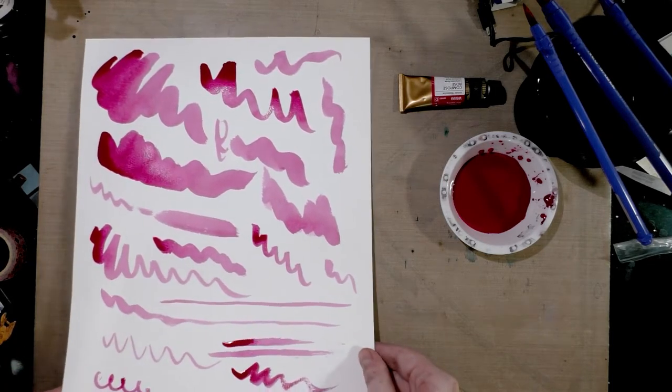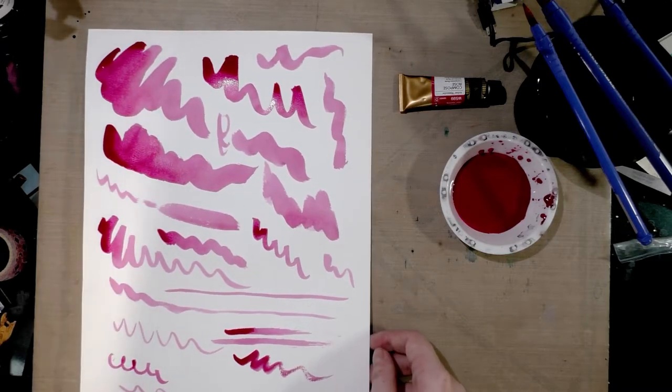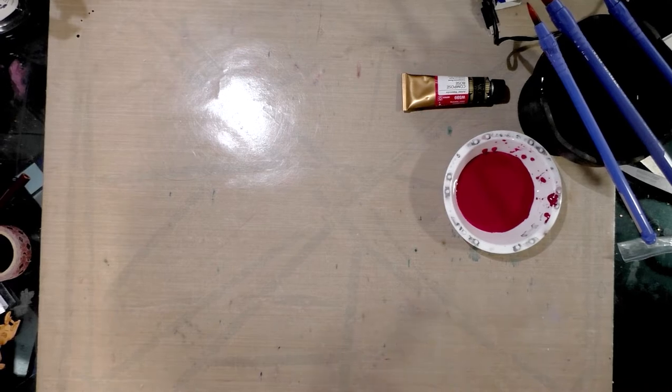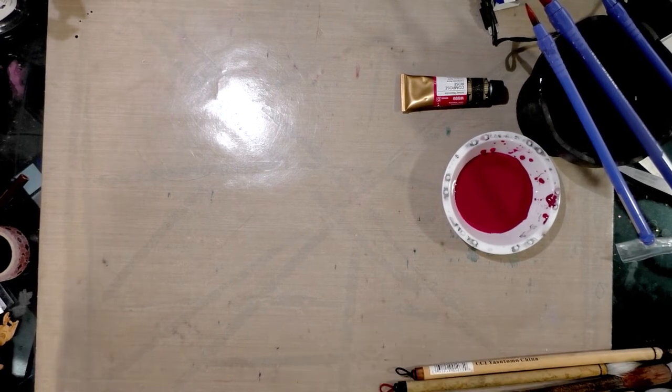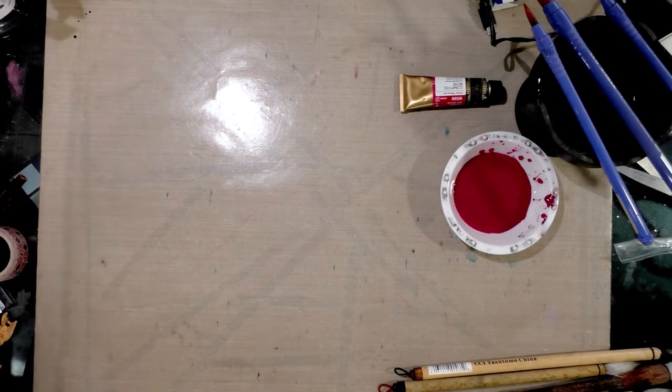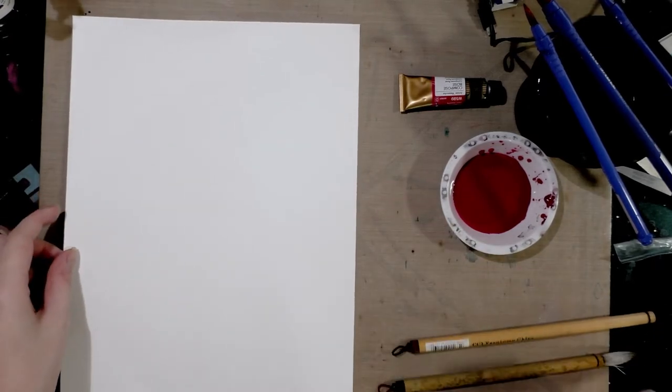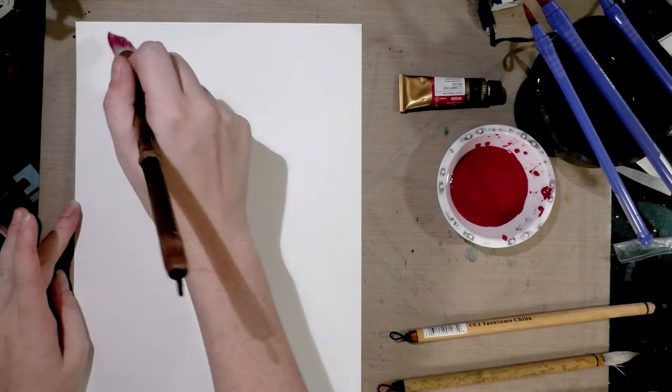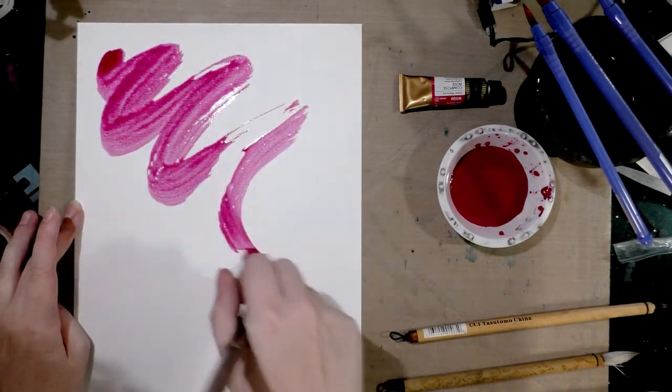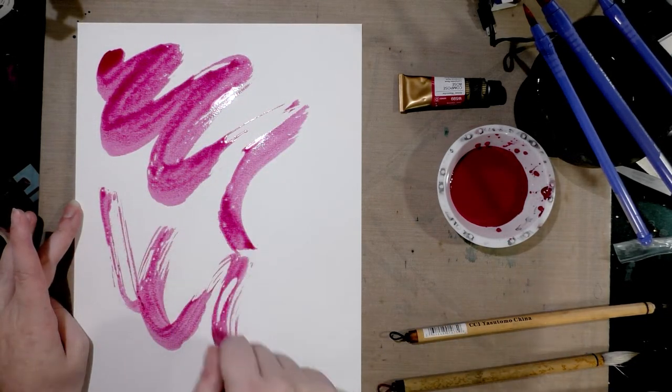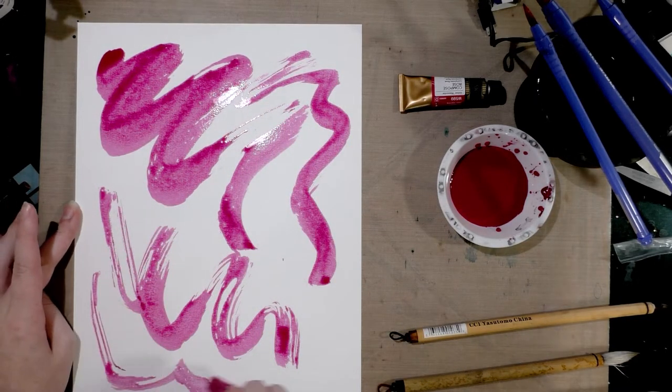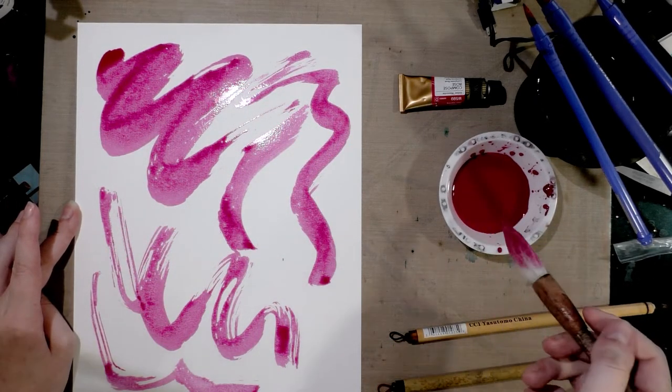So I'm going to go grab my other sumi brushes, and we'll see how those handle. I hung these upside down. They're, of course, not fully dry. I literally just rinsed them out. But they are dry enough for this. So let's start with that huge one. That one seems like a lot of fun. Yeah, look at that. It can really cover a lot of area. And this is the one from Daiso.